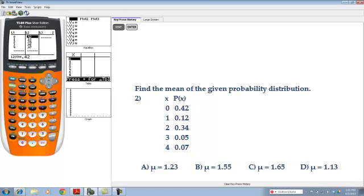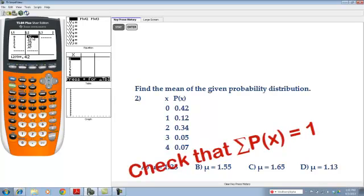For discrete random variables, one of the things we need to remember to check is that the sum of the probabilities must be equal to one. If the sum is not equal to one, then it is not a well-defined probability distribution table. So verify that the probabilities are equal to one first.